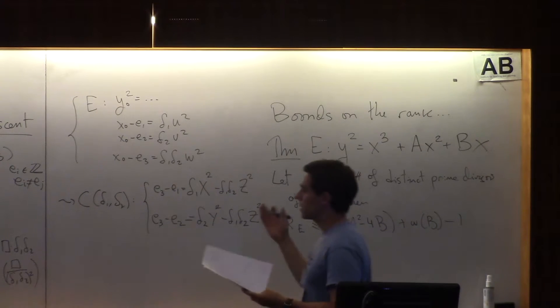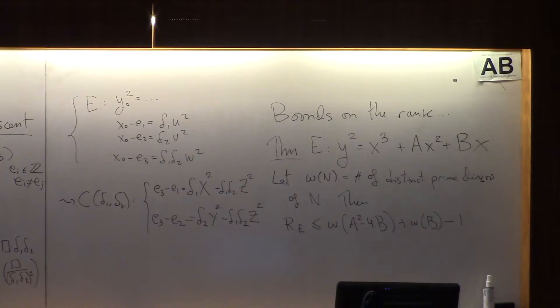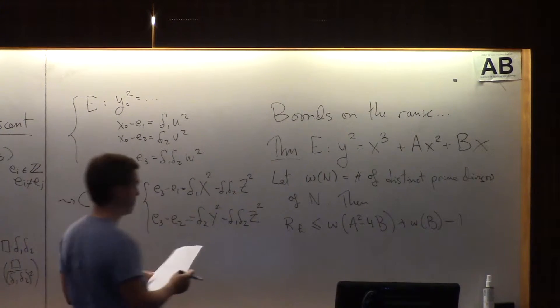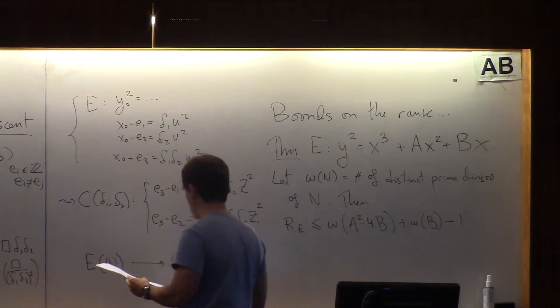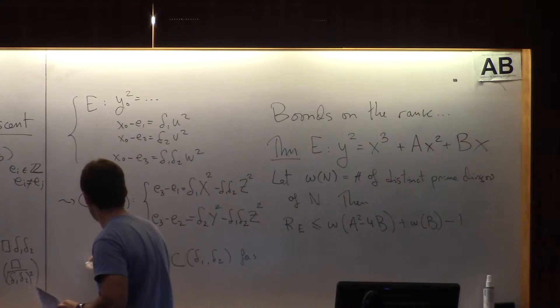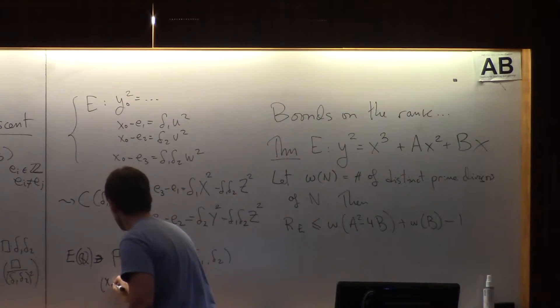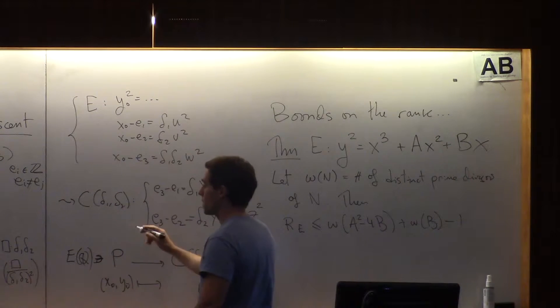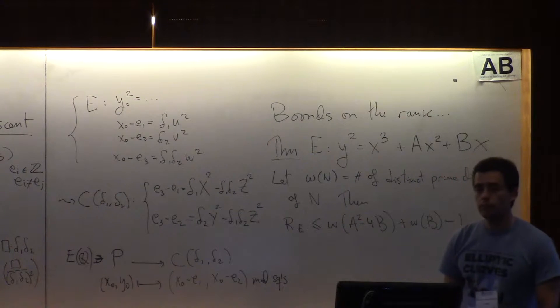And if you subtract equations, now I want to get rid of the x0 here. What this brings me is to what I'm going to call C of delta-1 delta-2, and it's e3 minus e1 is delta-1 of, I'm going to replace now, this is a variable, that's what I want to find.